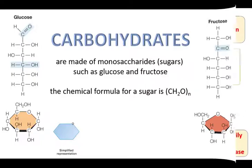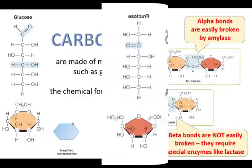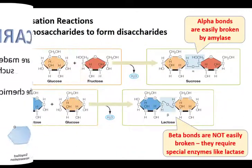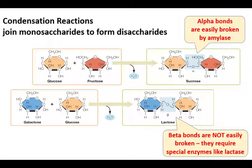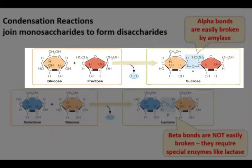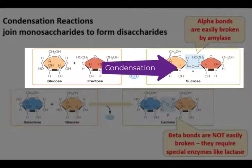In the digestive system chapter, we looked at the chemistry of breaking bonds. For example, amylase in saliva breaks the bonds between glucose molecules in starch. Now let's look at making those bonds. If we take two sugar molecules and remove a water molecule in a chemical reaction called condensation, or dehydration synthesis, we can make a disaccharide.